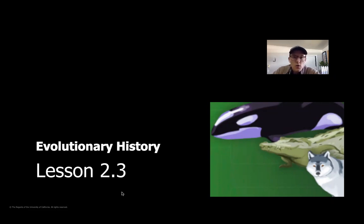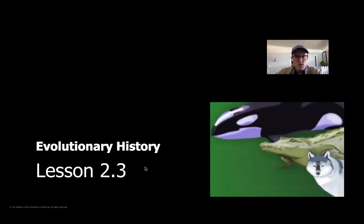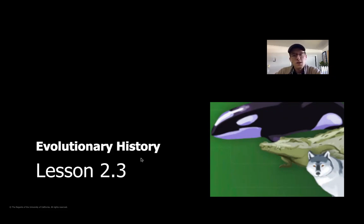If you remember that article, there were three different species that it talked about: the Galapagos tortoise, the polar bears, and some flightless ducks. During our last lesson, we read about the polar bears. Today, we're going to zoom in on that reading again, and we're going to take the opportunity to look a little bit closer at the Galapagos tortoise so that we can learn about a different animal.